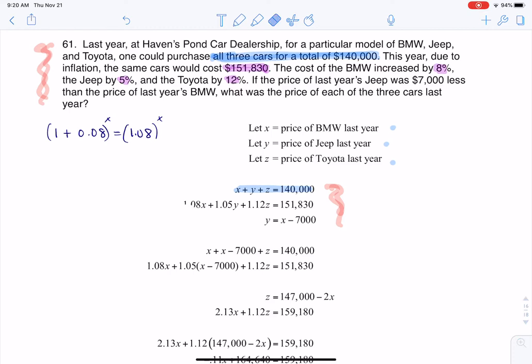We would have 1.08 to the X, but our X in this case is one because it's just one year later. So that's where I'm getting the 1.08X. And then the same holds true for the Jeep and Toyota. That's why I have 1.08X, then a 5% increase for the Jeep at 1.05Y, and a 12% increase for the Toyota at 1.12Z, totaling $151,830.